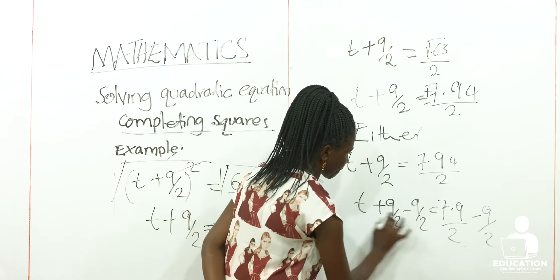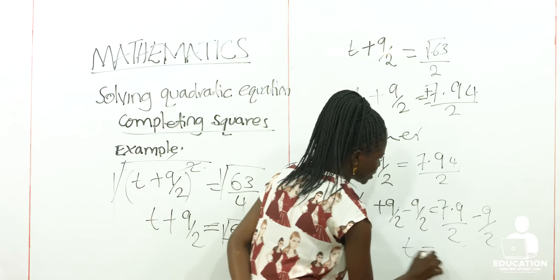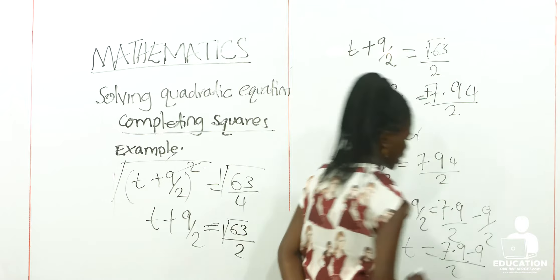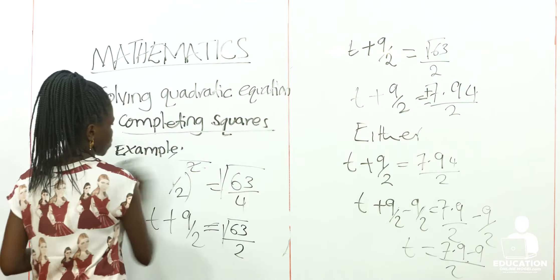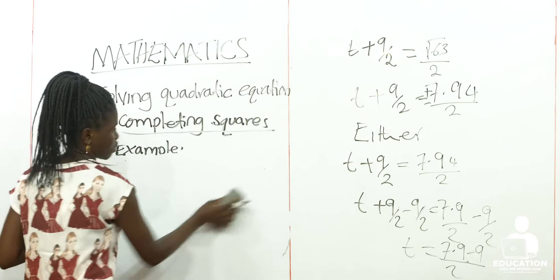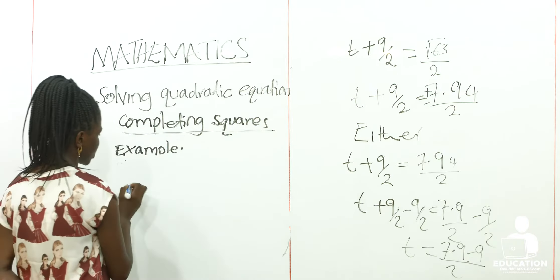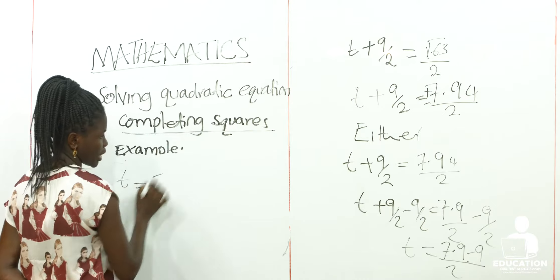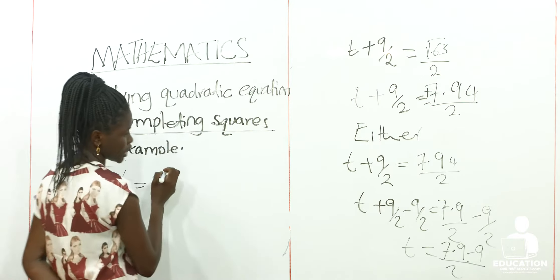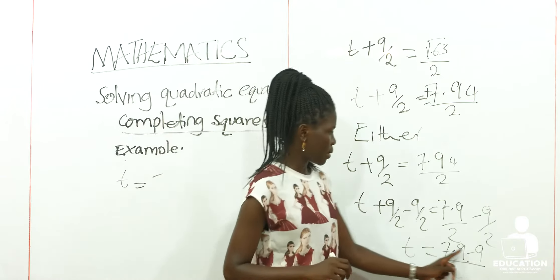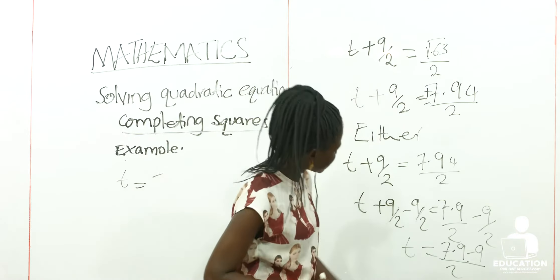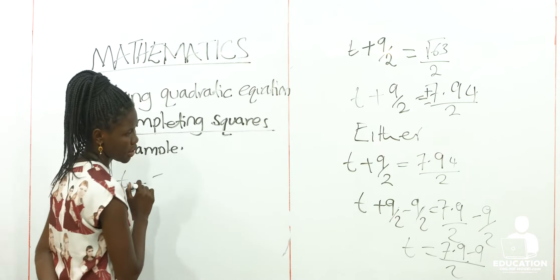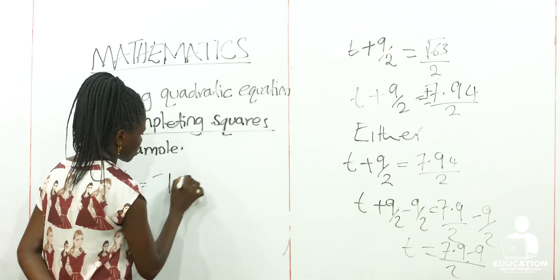Here we are going to have this cancel with this, so we shall have our T as — when we subtract this out of 2 — we shall have 7.9 minus 9. So we are going to have our first value of T as negative: 7.9 minus 9, that will be negative 1.1.